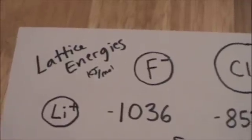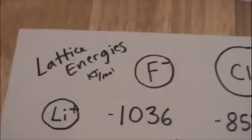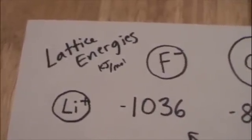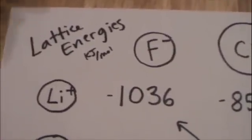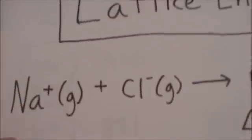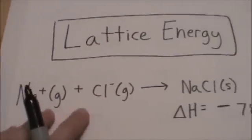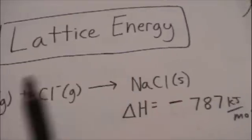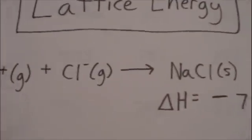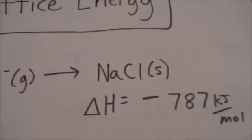Remember, you take energy to break a bond and release energy to form the bond. So that's why lattice energies are negative. We defined lattice energy as going from the gas ions to the solid ionic compound, and going from the ions to the solid releases energy.